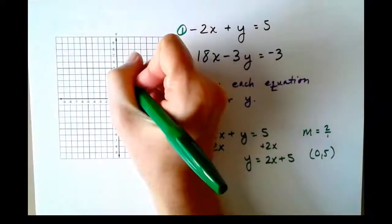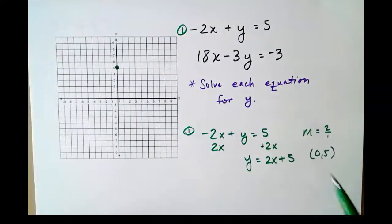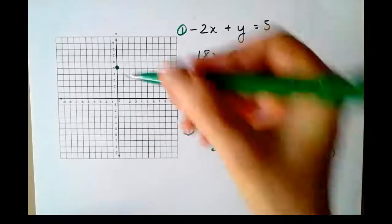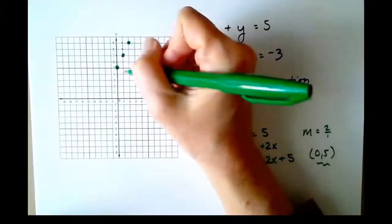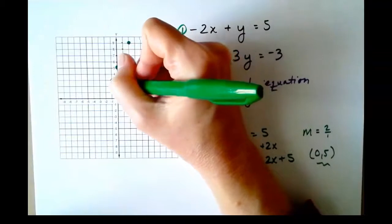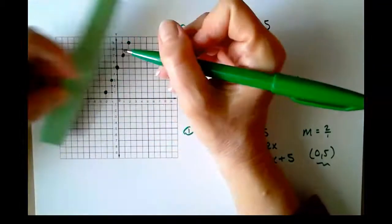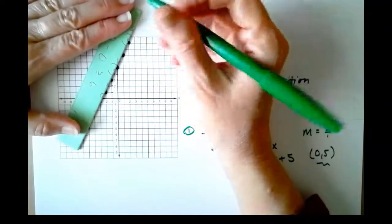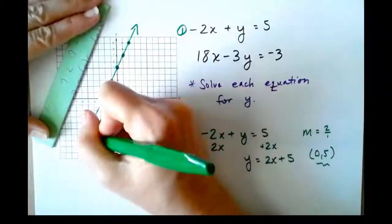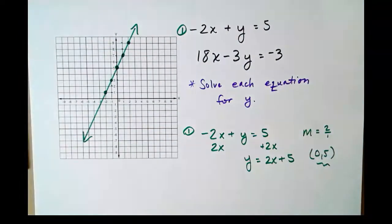We can graph that easily once we get it in slope-intercept form. There's my y-intercept at 0, 5. My slope is 2 over 1. By definition, slope is rise over run. So we'll be going up 2 over 1, up 2 over 1. We can also go down 2 back 1, down 2 back 1. As I've advised in previous videos, use a straight edge to mark your lines to keep your graphs as precise as possible. So there's our equation number 1, the green line.